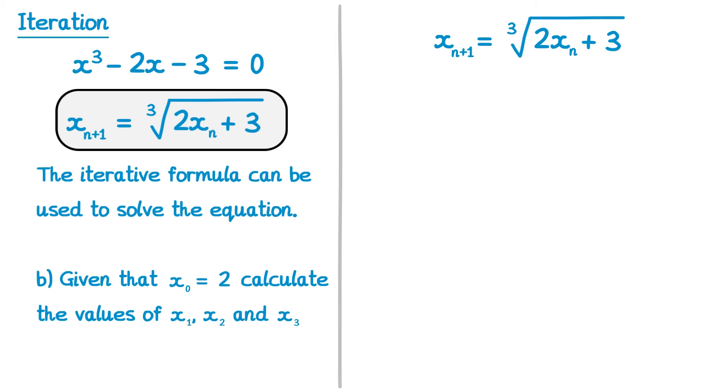In the question, we were told that x0 equals 2. This is known as our initial term. We need to calculate the next three terms. So we need to calculate x1 first. To calculate x1, we're going to write out the formula, cube root of 2 times x0 plus 3. And we're using x0 because that's the term we currently have. We already know what x0 is though. x0 is 2. So if we substitute x0 for 2, we can calculate this.